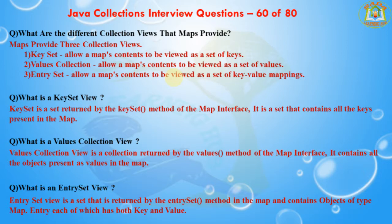What is the keySet view? KeySet is the set returned by the keySet method of the Map interface. It is a set that contains all the keys present in the map. What is the values collection view? A values collection view is a collection returned by the values method of the Map interface. It contains all the objects present as values in the map.